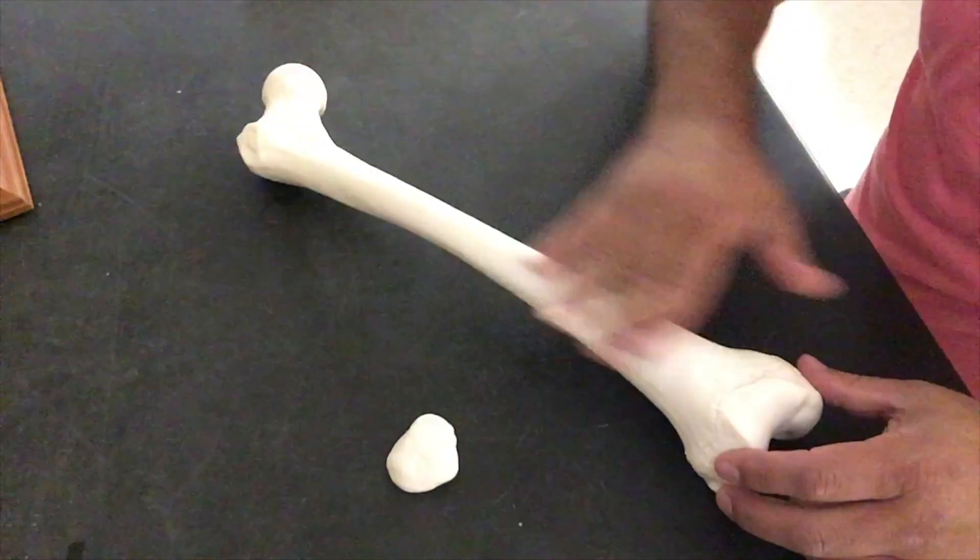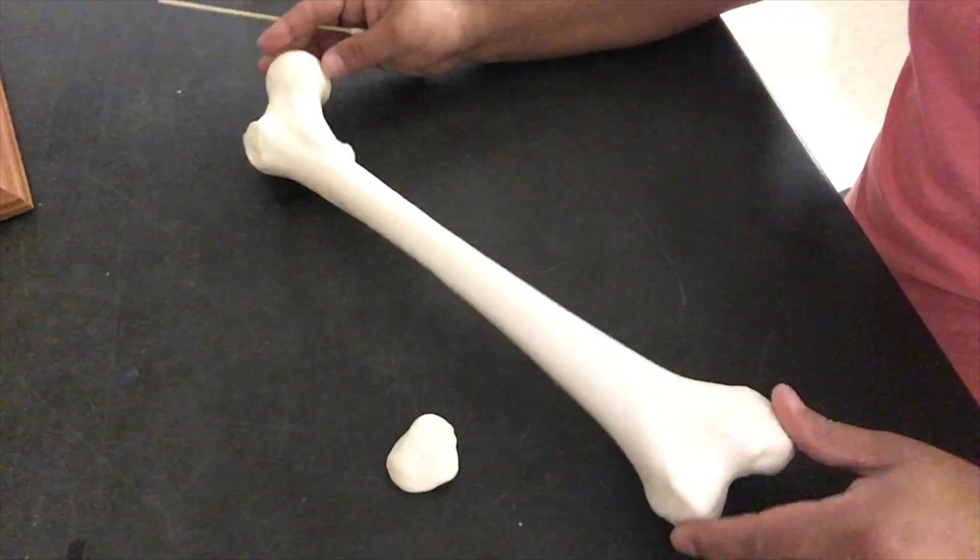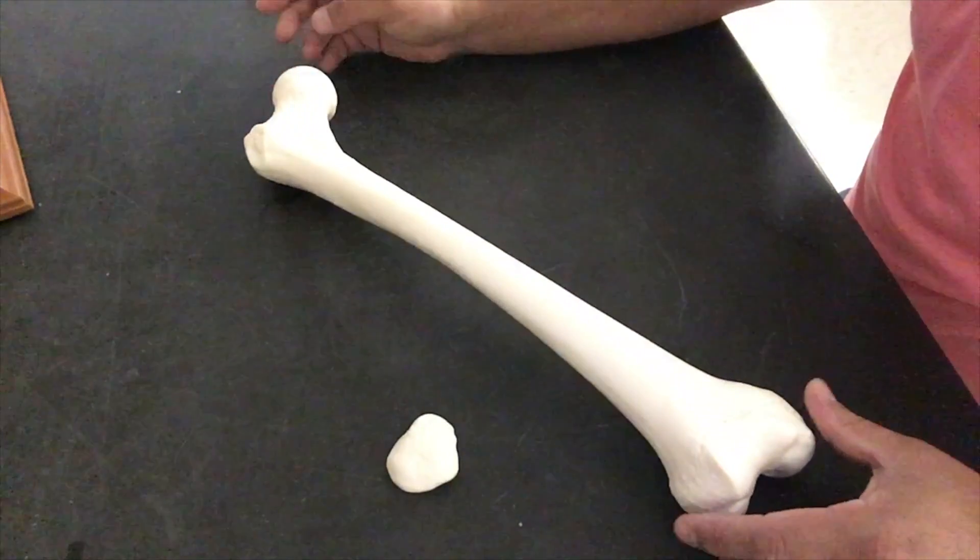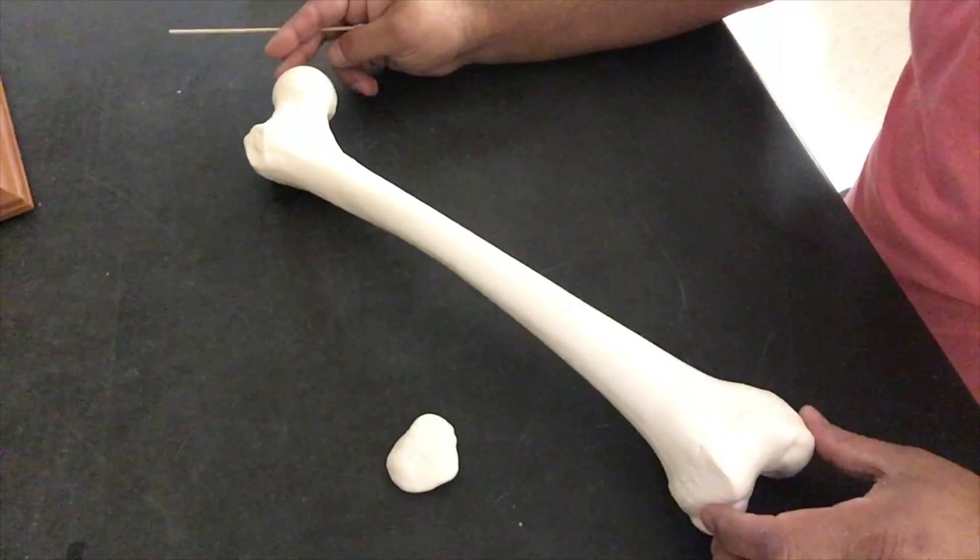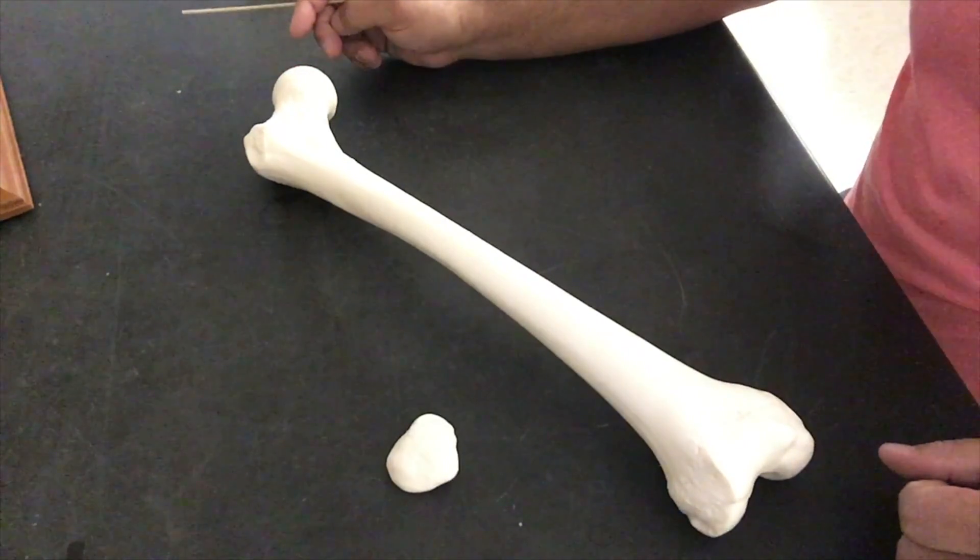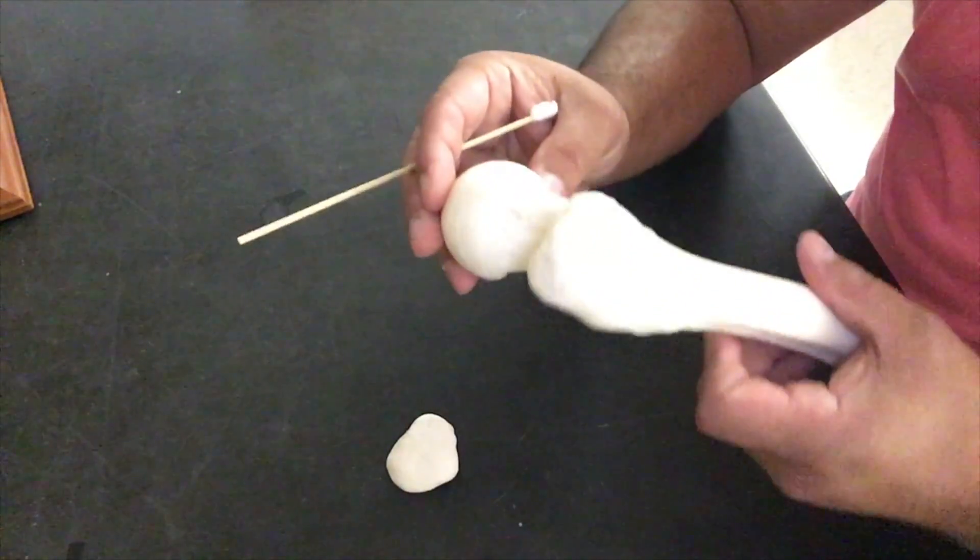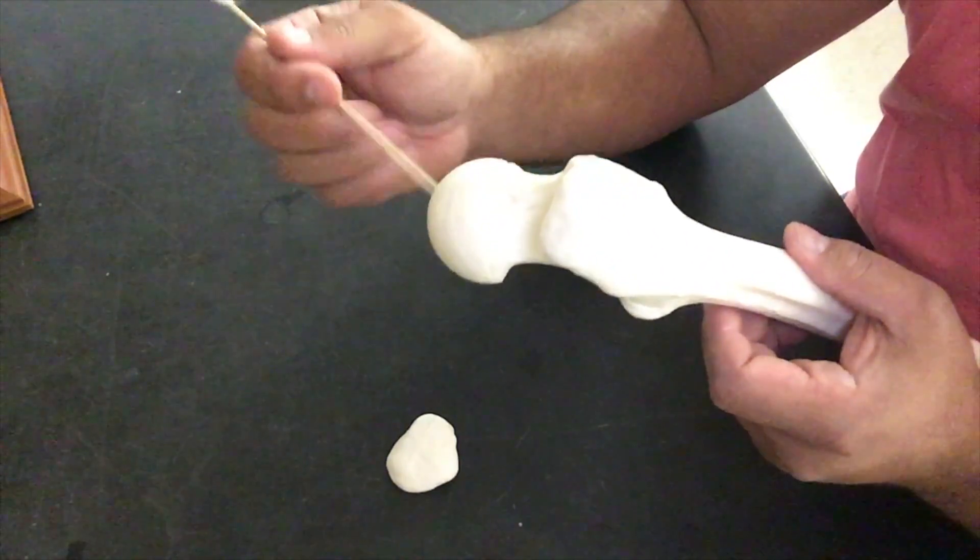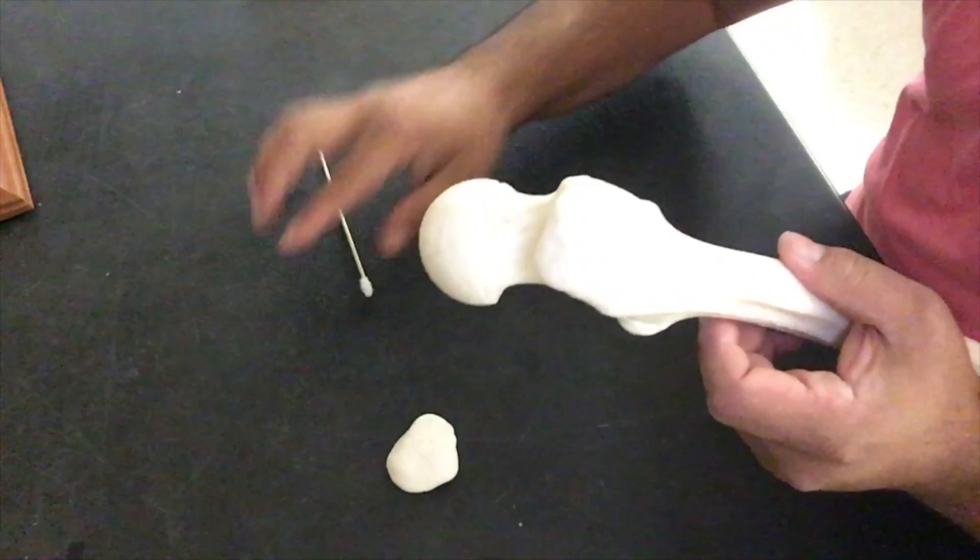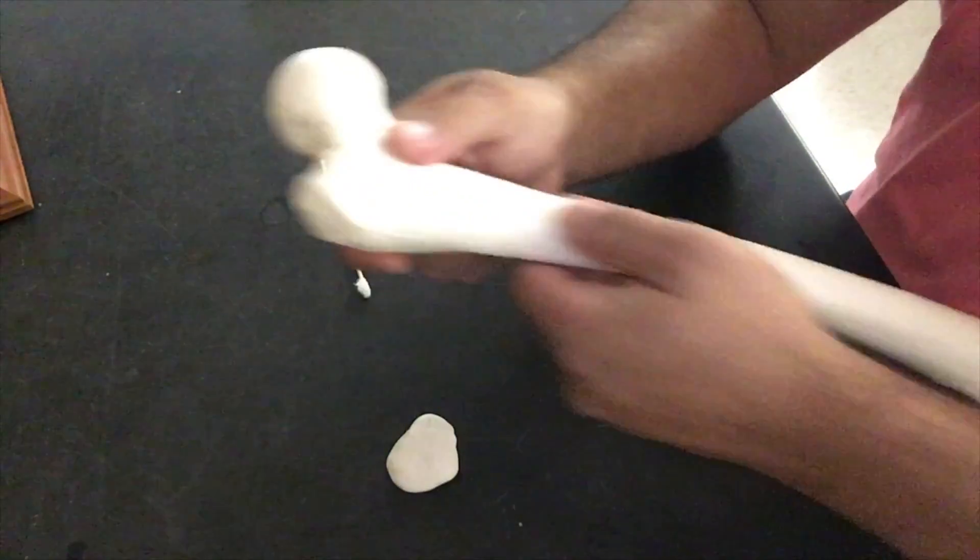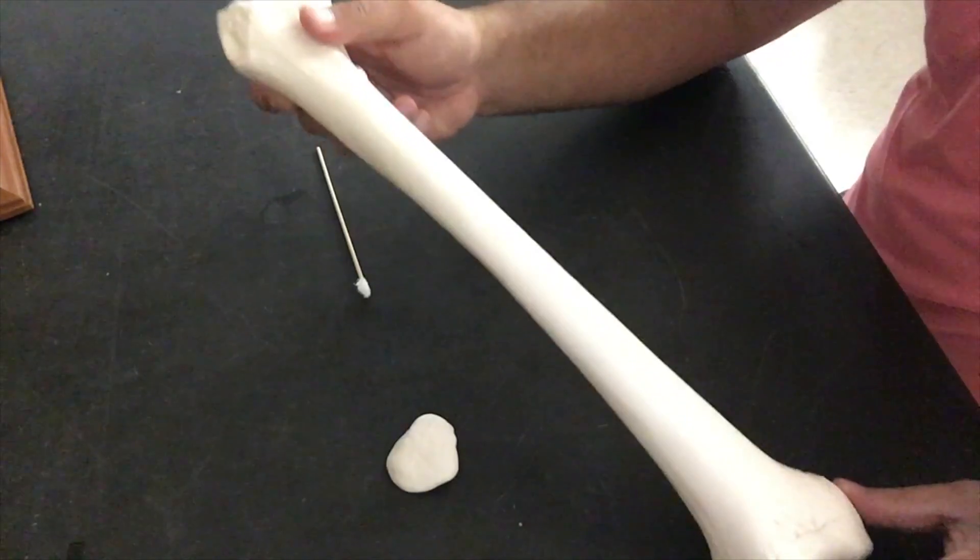So let's go through the basic anatomy of our femur. We'll identify some key landmarks and identify left or right. Now, starting with the uppermost portion of this bone, we have the head, head followed by neck, followed by body or shaft.